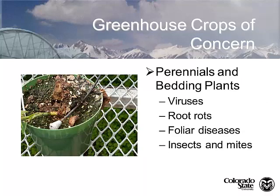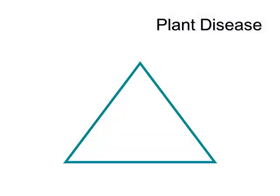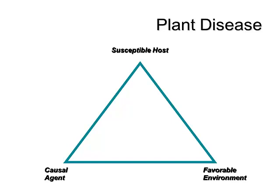In greenhouse sanitation, we need to keep out viruses, root rots, foliar diseases, insects, and mites. Now, you've all seen the disease triangle. For plant disease to happen, you need a susceptible host, a causal organism, and a favorable environment. In greenhouse sanitation, we want to make sure our environment is clean and doesn't lead to plant disease.